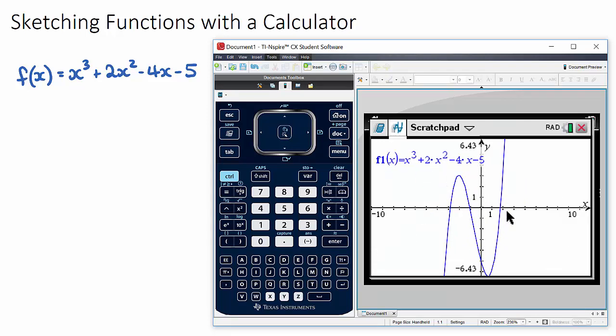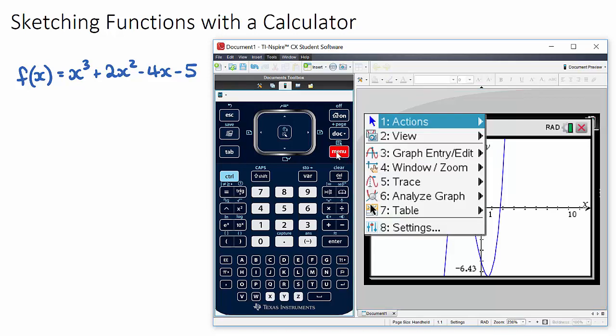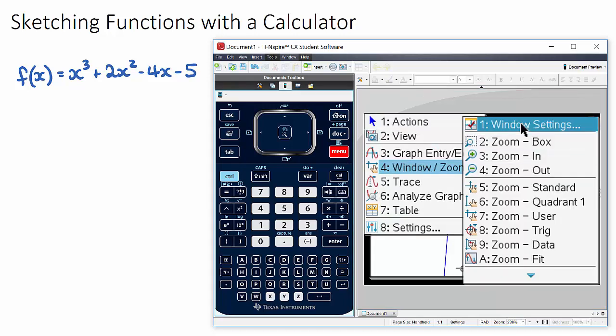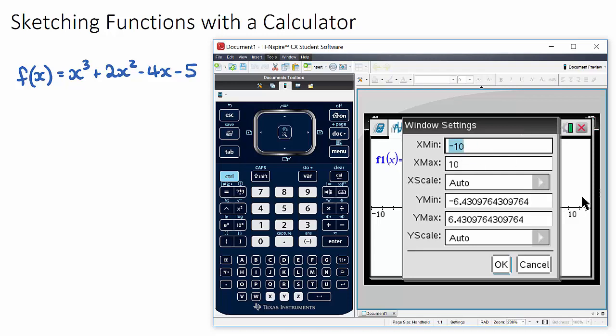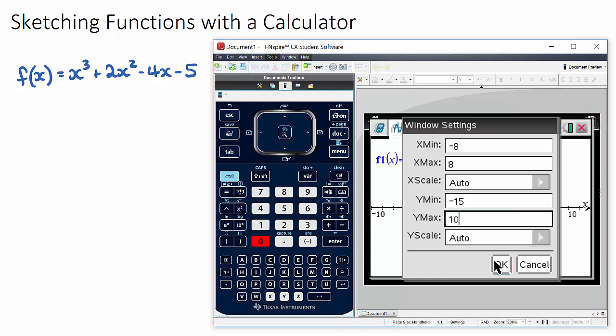What I'm going to first do is change my zoom to have a nicer shape. I can go to menu, window and zoom, and change my window settings. I'm going to change my x min to negative 8, my x max to 8, but I'm going to make this a little bit lower - let's go negative 15 and positive 10 for now.